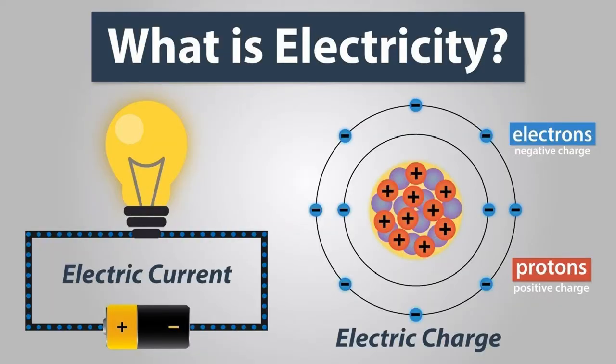Electricity is a type of energy that involves an electrical charge. Electricity is the flow of tiny particles called electrons. They're not just smaller than atoms — they're actually part of atoms. Electrons are tiny particles that flow around the outside of the atom and are able to jump from one atom to another.